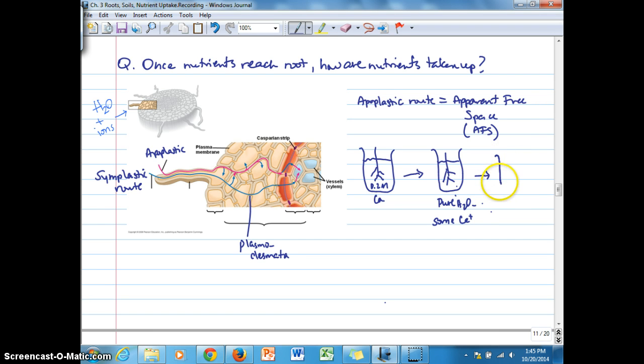Then we transfer that plant to a third beaker. In this case, the root system is immersed in a beaker that contains 0.2 molars of a magnesium solution. Then we see a rise again in the amount of calcium entering that solution.